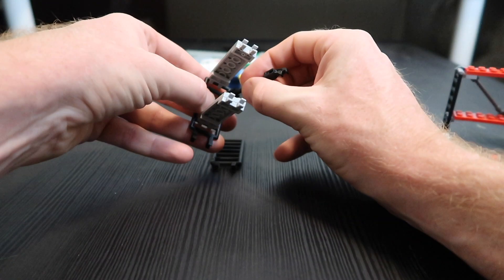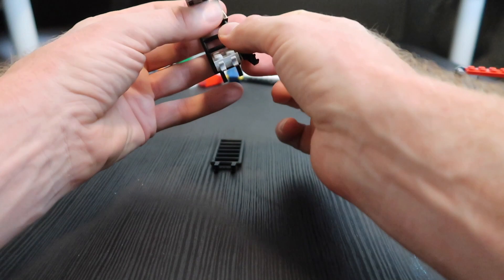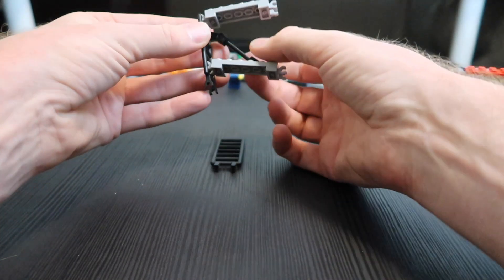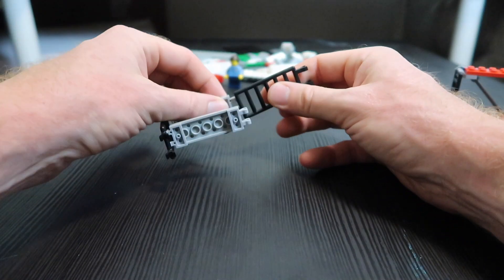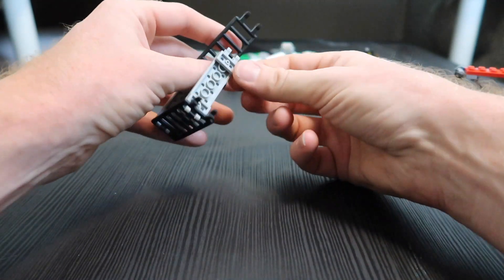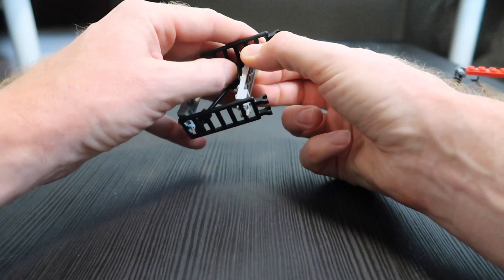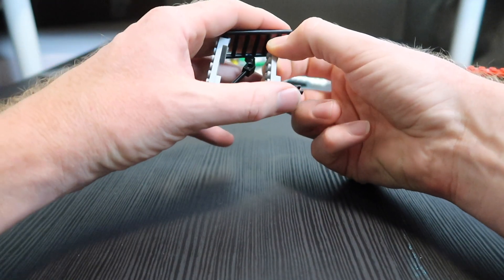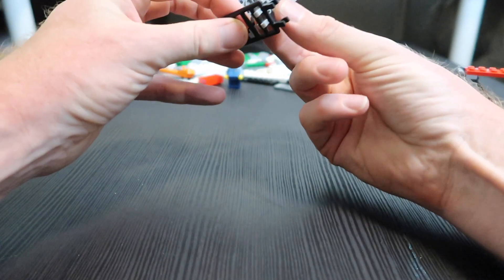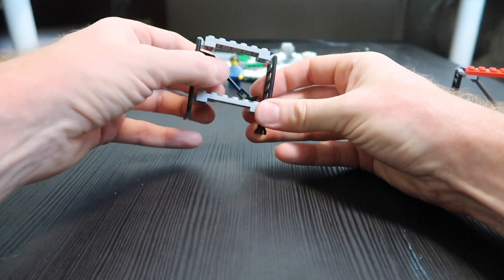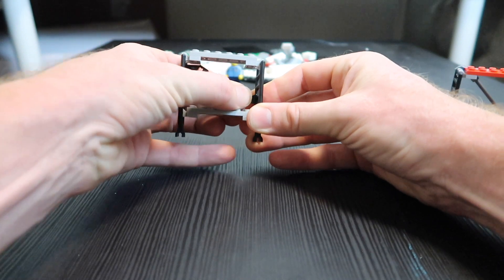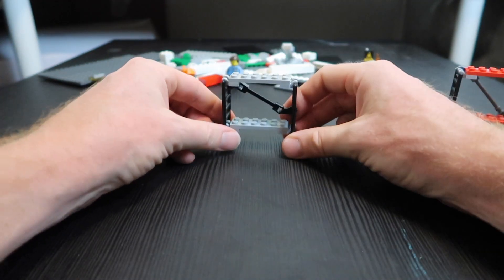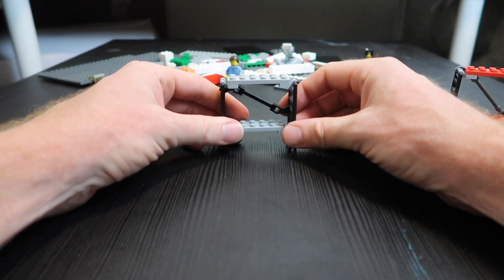I'm going to clip this in now because it makes it simpler in a minute. So there we go. So you start to see how that comes together really easily. Now we'll put this top bar in. And clip that one into there. So now we have the basic premise of our scaffolding. And we'll clip that one into there. And we have a very simple piece of scaffolding.